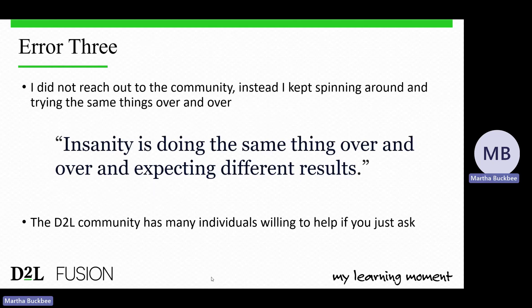The third error I had was that I did not reach out to the community. Instead, I kept going around and around doing the same things over and over. I've heard it said that insanity is doing the same thing over and over and expecting different results, and I certainly felt crazy for quite a while. If I had simply reached out to the community, someone would have been able to quickly point out my errors. The community has a lot of people willing and able to help if you just ask.